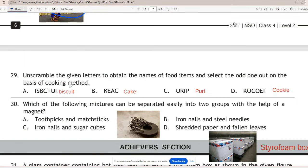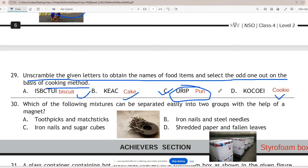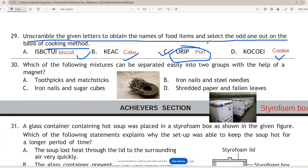Question 29: Unscramble the given letters to obtain the names of food items and select the odd one out on the basis of cooking method. Correct option is C - puri. Other options biscuit, cake and cookie are made with baking while puri is made with frying. Puri is made by deep frying in oil.